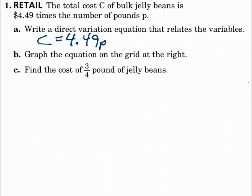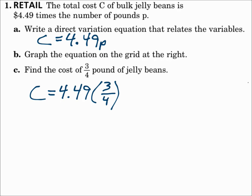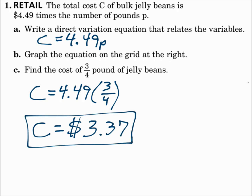Part c: find the cost of 3 quarters of a pound of jelly beans. Use the formula c equals 4.49p, where p is the pounds of jelly beans. Substitute 3 quarters in for p and solve for the total cost. So 3 quarters of a pound of jelly beans costs approximately $3.37. Use your formula, substitute in what you know, and solve for what you don't.